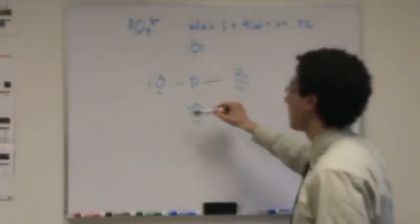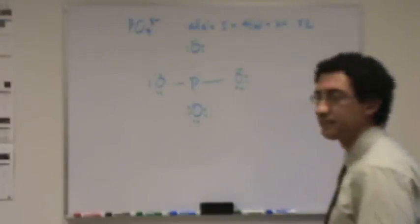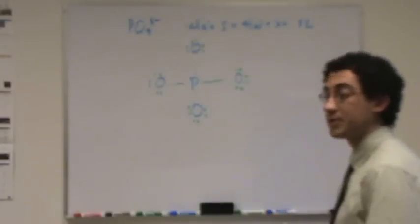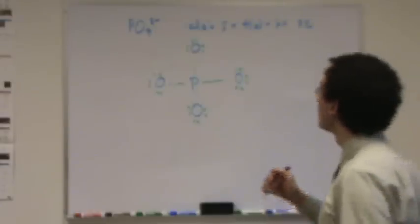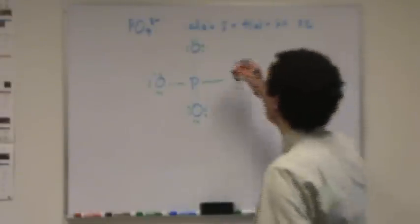What's the formal charge on each oxygen? They're all equivalent. They're all octet. Formal charge. Plus one? Not plus one. No, it's minus one. Yeah, there's too many. So they're all minus one.